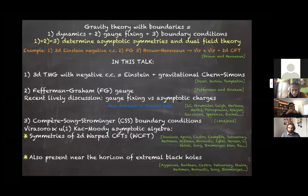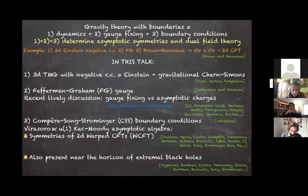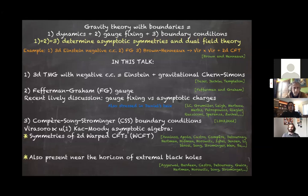I want to present a setup that is interesting in regard to this question. We are dealing here with a gravity theory with a boundary, and such a theory will be specified by giving its dynamics, its gauge fixing of the bulk metric, and its boundary conditions. All three ingredients are essential to defining the theory itself. Once dynamics, gauge fixing, and boundary conditions are specified, we know the asymptotic symmetries and therefore the features of the dual field theory.